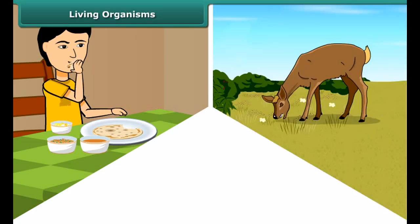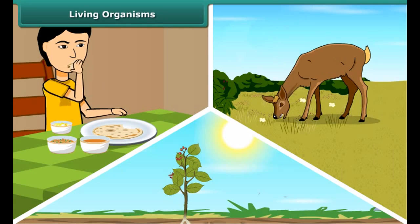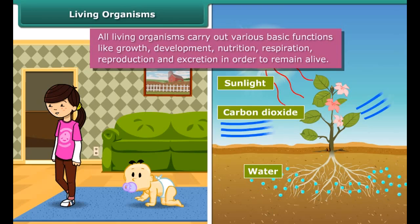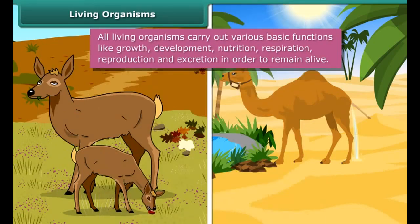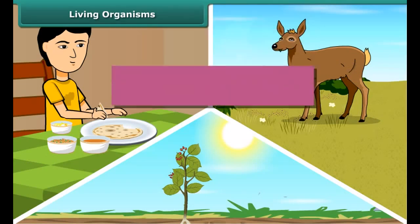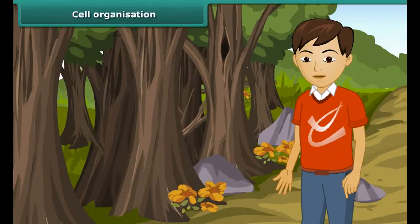We know that living organisms — human beings, animals, and plants — require food to survive in their surroundings. They show great divergence in their physical appearance, but they all grow and develop during their life cycle. All living organisms carry out various basic functions like growth, development, nutrition, respiration, reproduction, and excretion in order to remain alive.